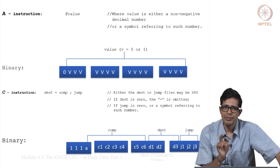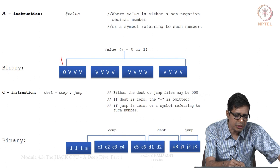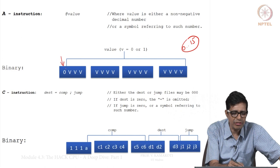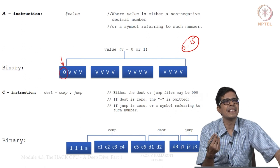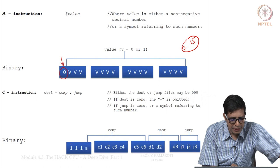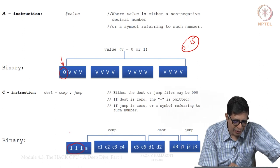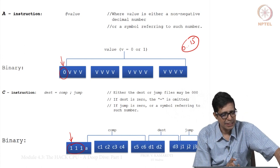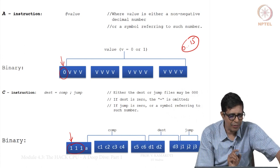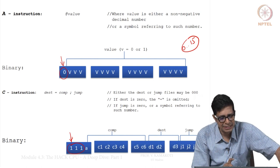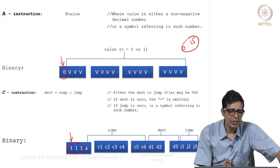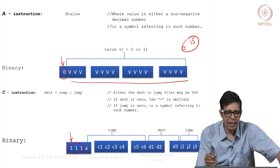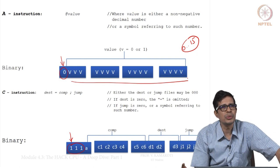We call the bits from the 0th bit to the 15th bit. If the first bit (bit 15) is 0, then it is an A instruction. If the first bit is 1, then it is a C instruction. For the A instruction, the remaining 15 bits represent a value and this value will be stored into the A register.